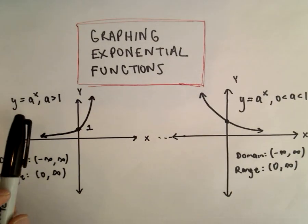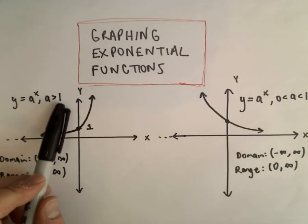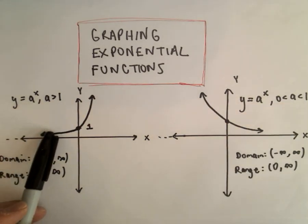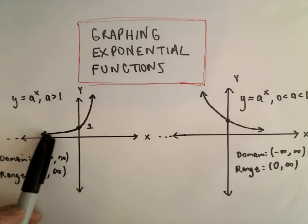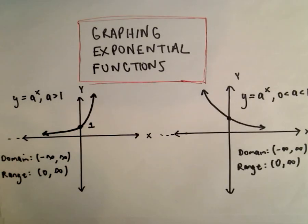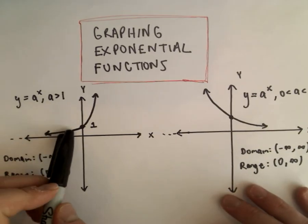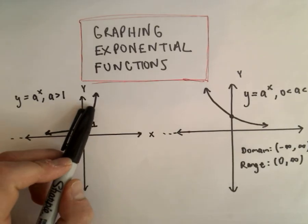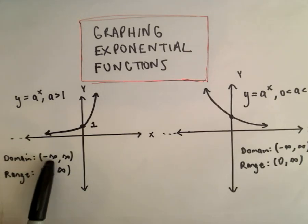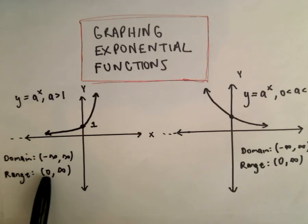An exponential function is a function of the form Y equals A to the X, where A is greater than 1, or A is between 0 and 1. If A is greater than 1, you have the graph of a function that's increasing. If somebody's talking about exponential growth, that means it's growing very rapidly — it may be growing slow for a while, but at some point the function will start growing very rapidly. The domain is from negative infinity to positive infinity, all real numbers, and the range is from 0 to infinity.